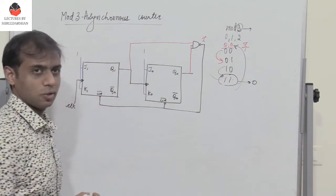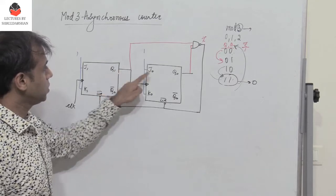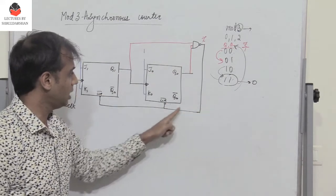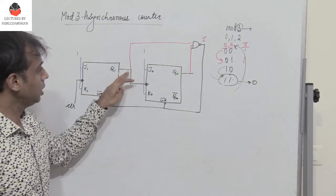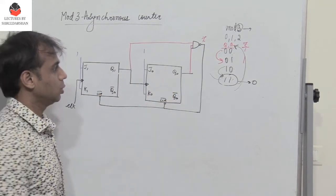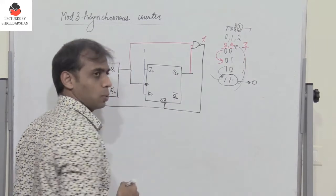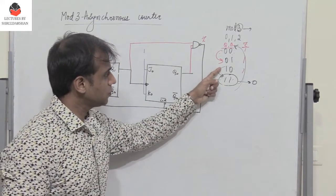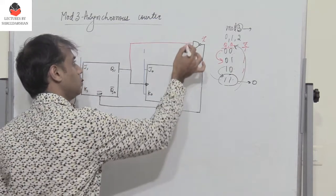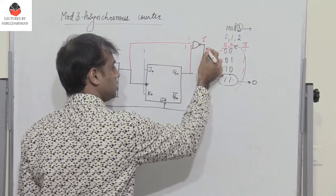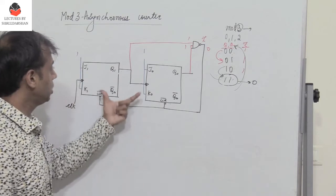Then when you have 10, the output is again 1. But when the state changes from 10 to 11, you have 11 coming here, so this becomes 0. Immediately both flip-flops are cleared.